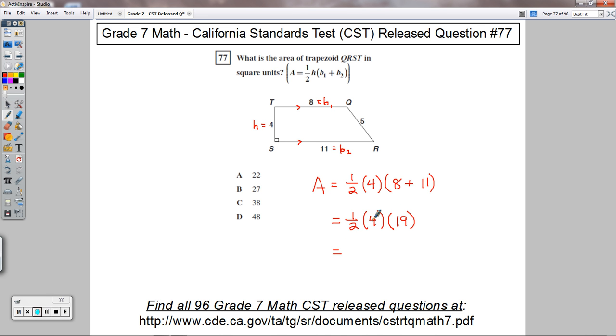So I can multiply in any order I want. One half of four would be easiest. That would be two. And then two times nineteen gives me my final answer. Thirty-eight.